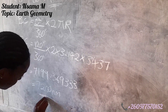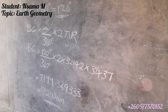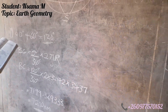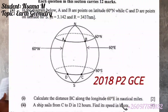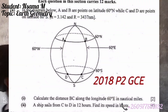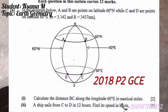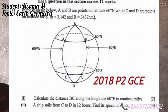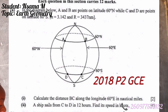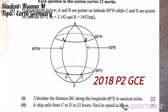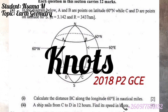Then we go to number 2, which says: a ship sails from C to D in 12 hours. Find its speed in nautical miles.